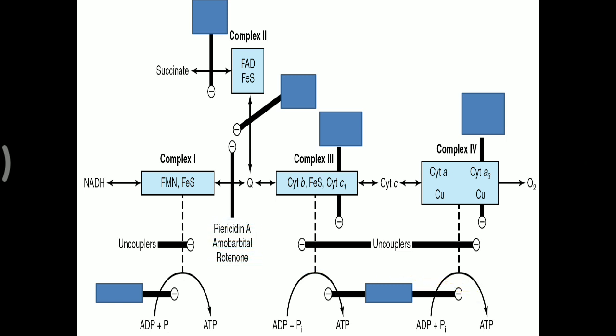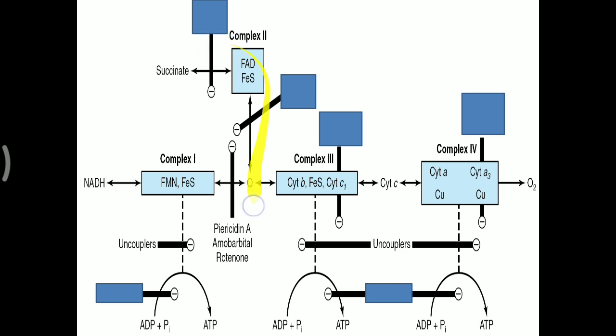Complex 1 is inhibited by piericidin, amobarbital, and rotenone, preventing electron transport from complex 1 to coenzyme Q. Complex 2 to coenzyme Q is inhibited by carboxin, which blocks transfer of electrons from FADH2 to coenzyme Q. Additionally, malonate competitively inhibits succinate dehydrogenase — since malonate is structurally similar to succinate — thereby also inhibiting this part of the electron transport chain.